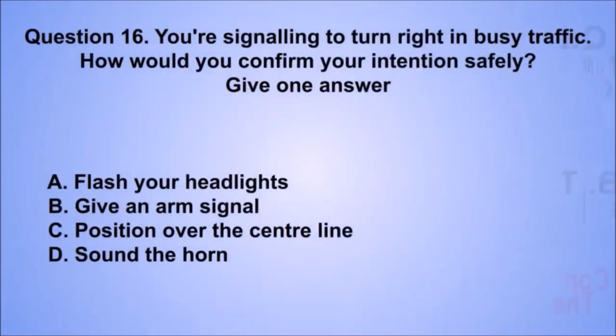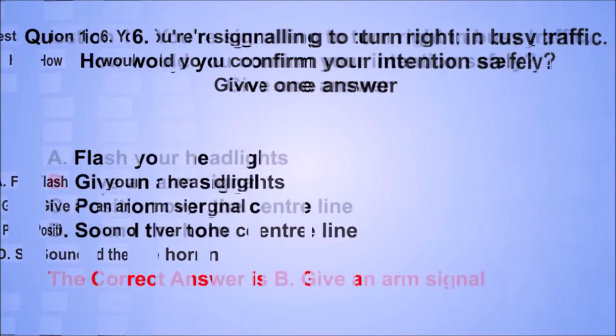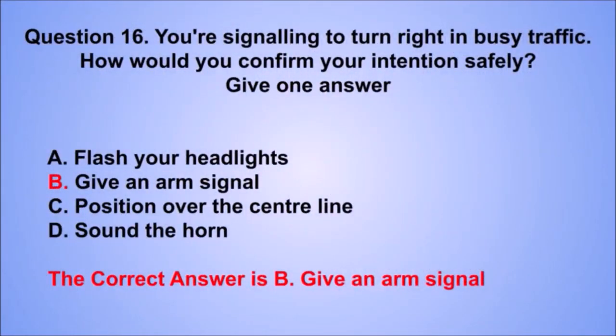Question 16. You're signaling to turn right in busy traffic. How would you confirm your intention safely? The correct answer is B: Give an arm signal.